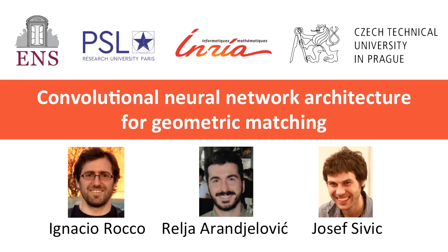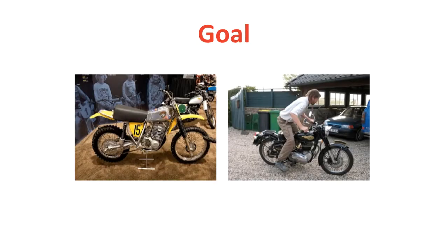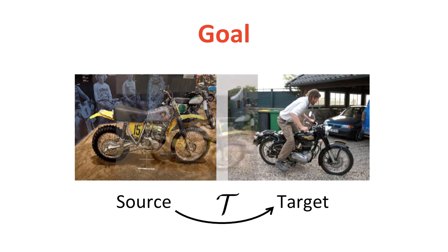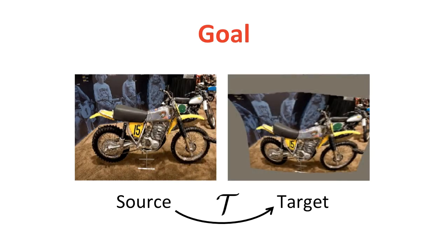Hello everybody. I'm Ignacio Rocco and I'm going to present our work on CNN Architecture for Geometric Matching. The goal of this work is to solve the image alignment problem. We're given a source and a target image, and we seek to find a transformation T that aligns the source image to the target image.